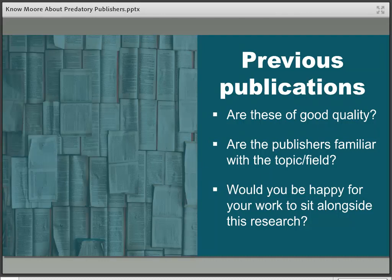Perhaps the biggest indicator of quality is to have a look at the quality of the publisher's previous publications. Are they what you would consider good quality? Would you publish with this publisher? Would you read these articles? Would you want your work sitting alongside this kind of output? Also look for any errors in the title or abstract, as this might show that the editors aren't really familiar with the topic. This is very important if you're dealing with specialist terminology like medical or scientific terms — are there mistakes that really shouldn't have slipped through? Thinking back to the Star Wars example, anyone with medical or sci-fi knowledge should have raised a red flag.